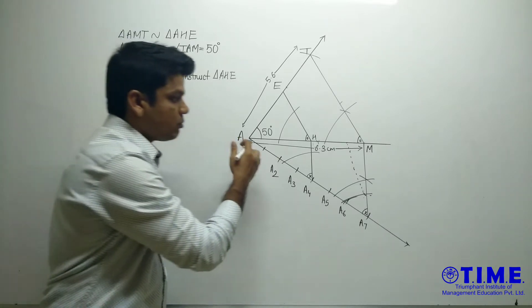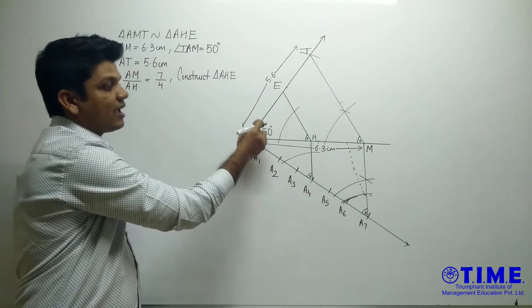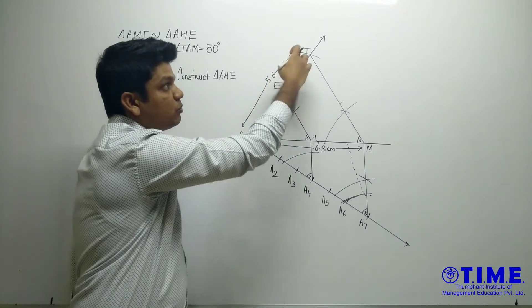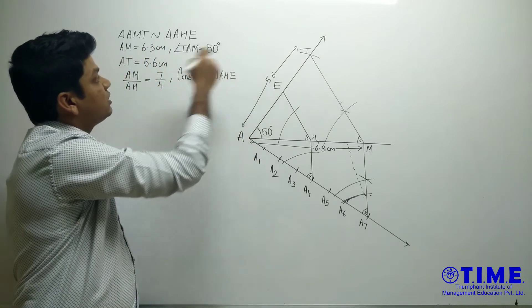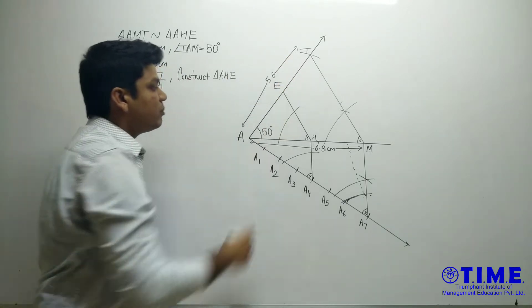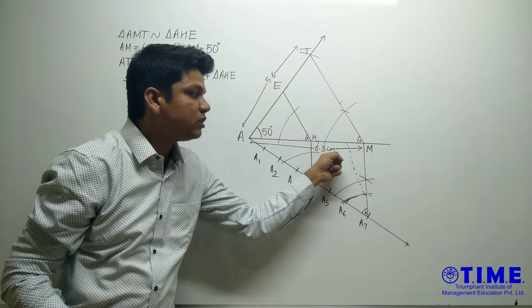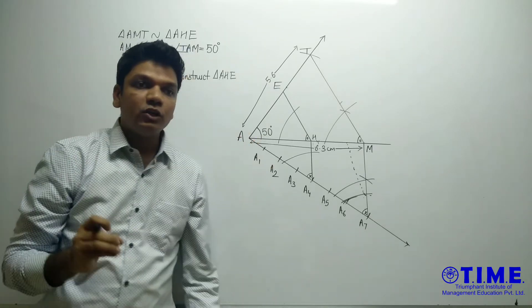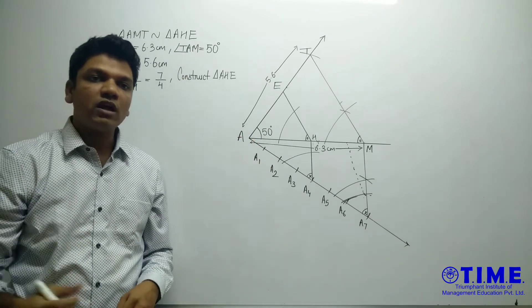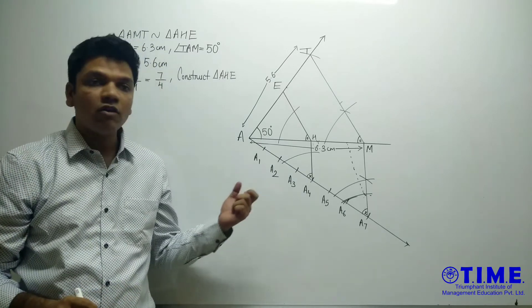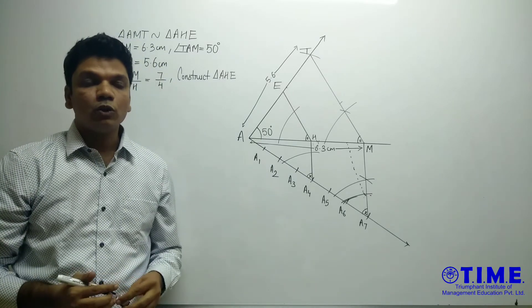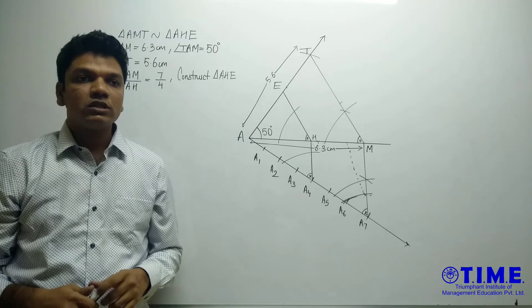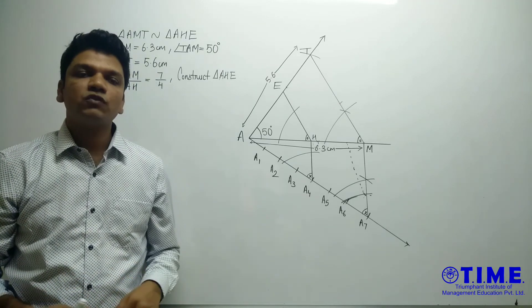Then you should always mark each and everything whatever is given. Like angle A is given as 50 degrees, write that measurement. Whatever measurement is given, like AB is given as 5.6, write the measurement. AM is given as 6.3, write the measurement. All this needs to be done and needs to be noted properly. This will avoid losing your marks, like half or quarter marks. You can lose in such type of things. So these things will avoid losing your marks. Hope this is helpful for you all. And all the best for your exam.